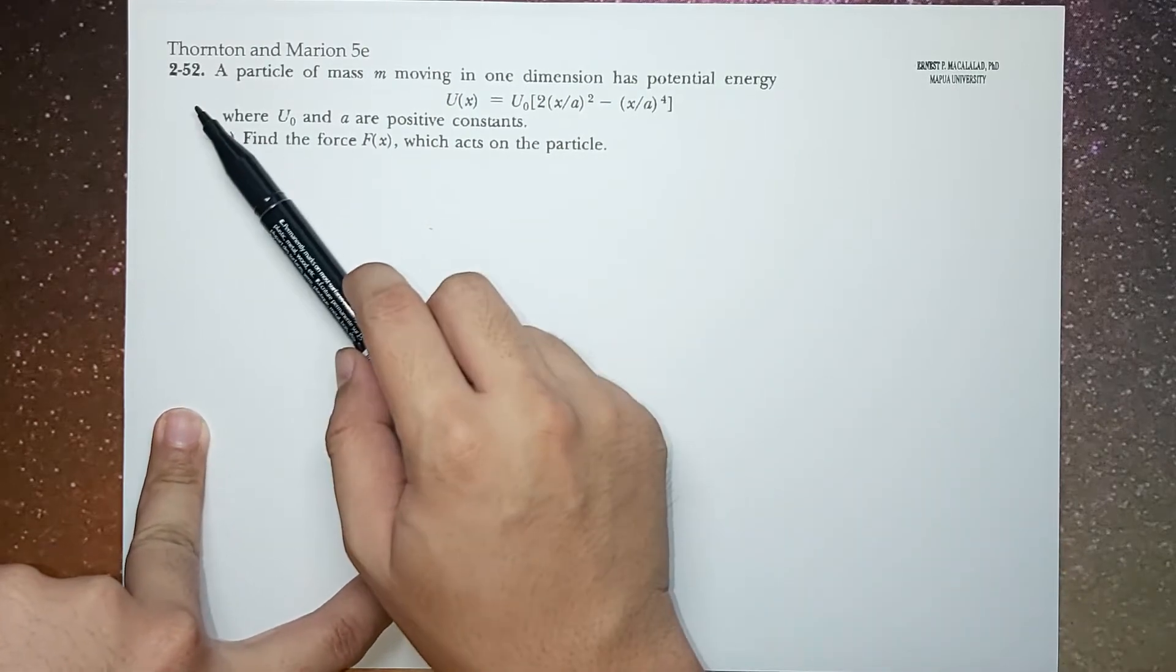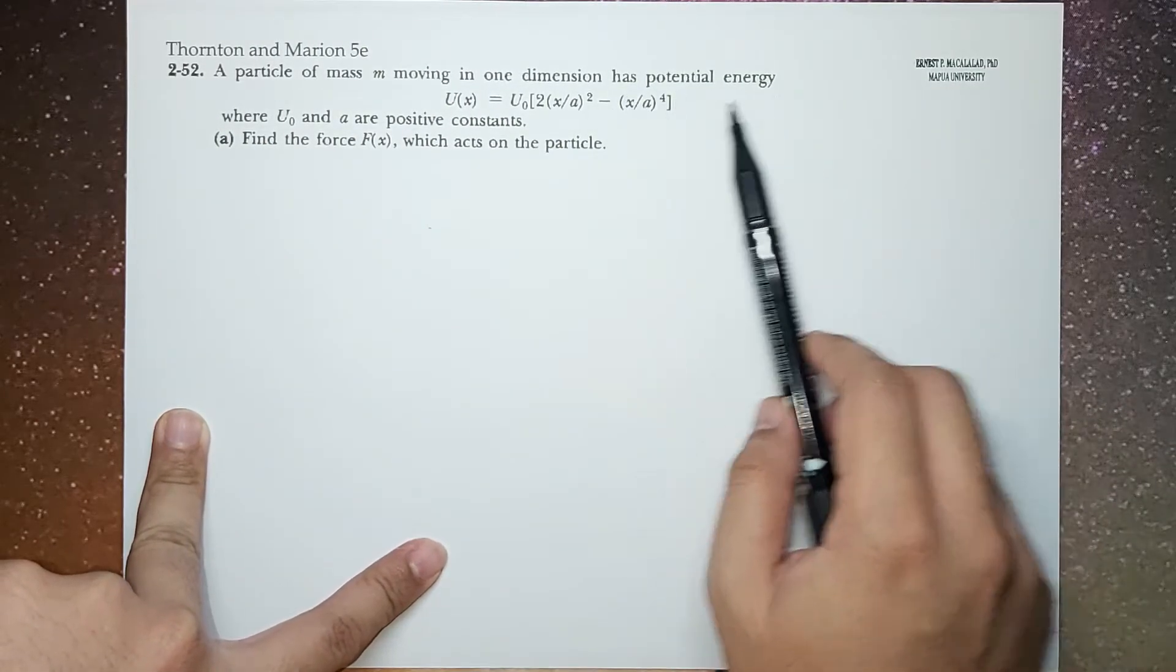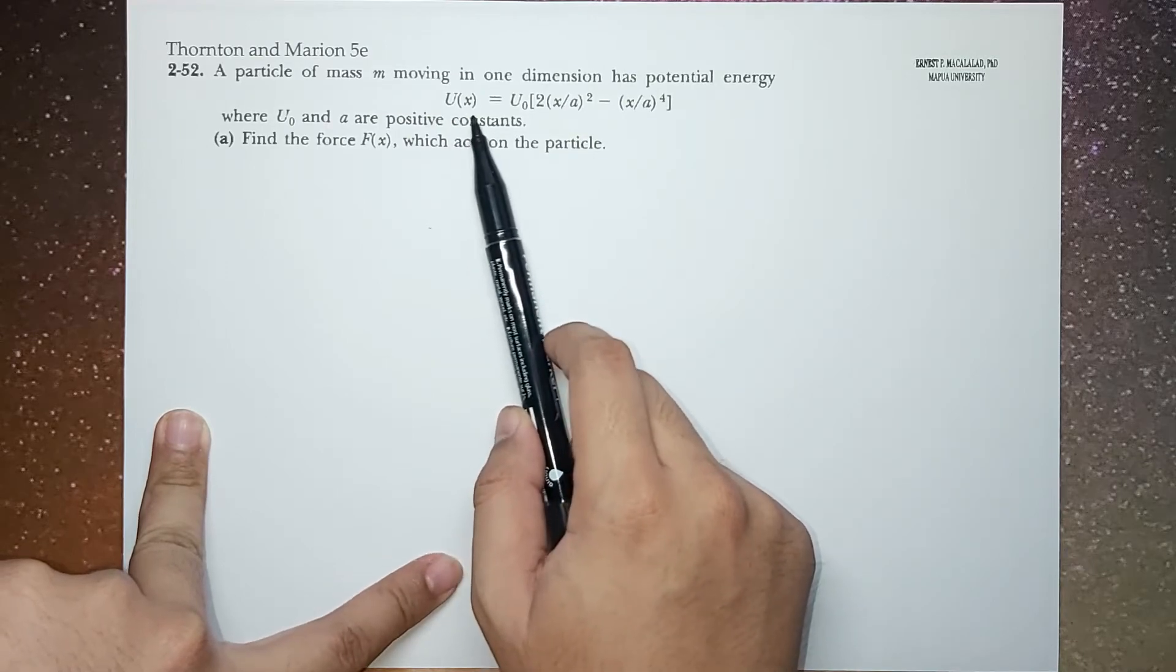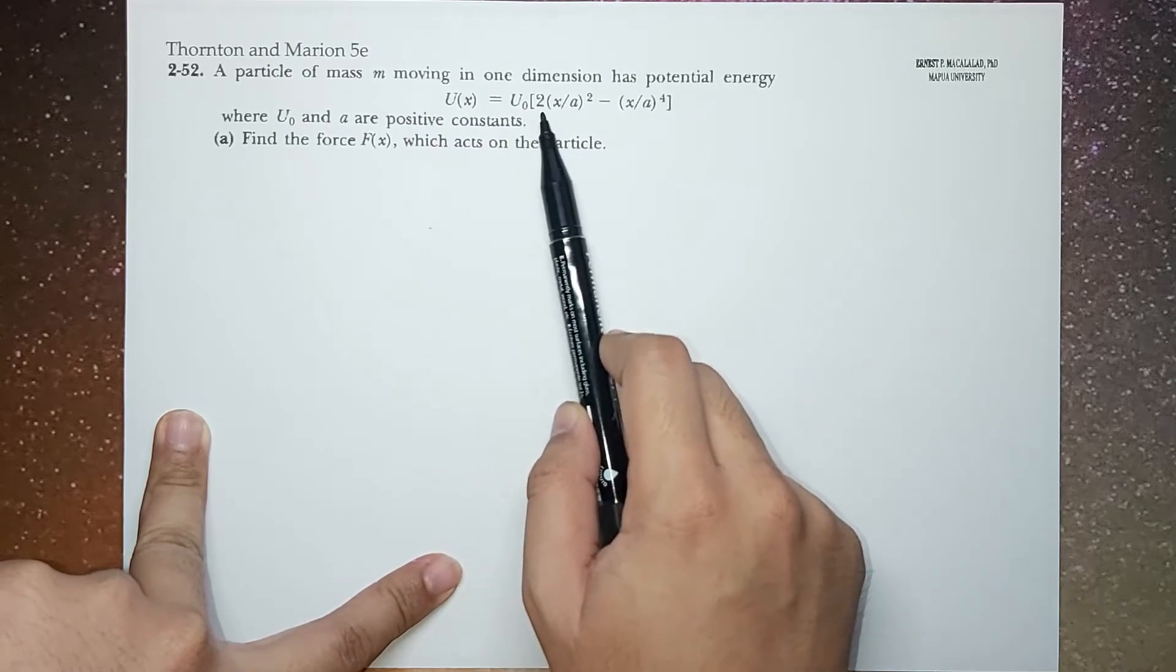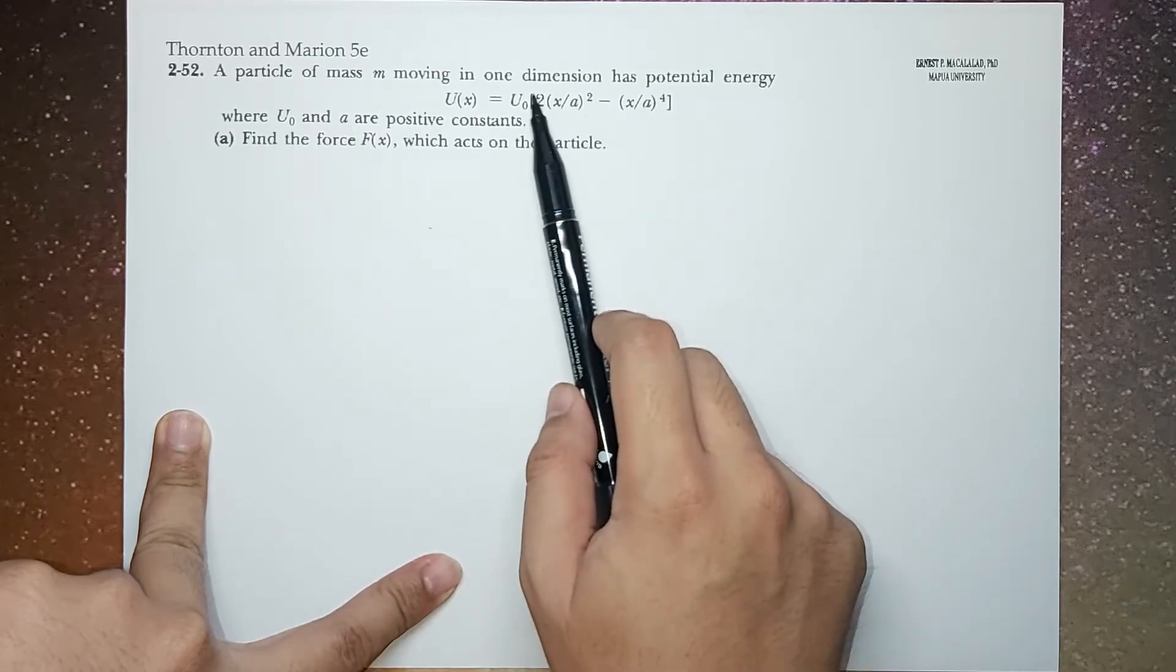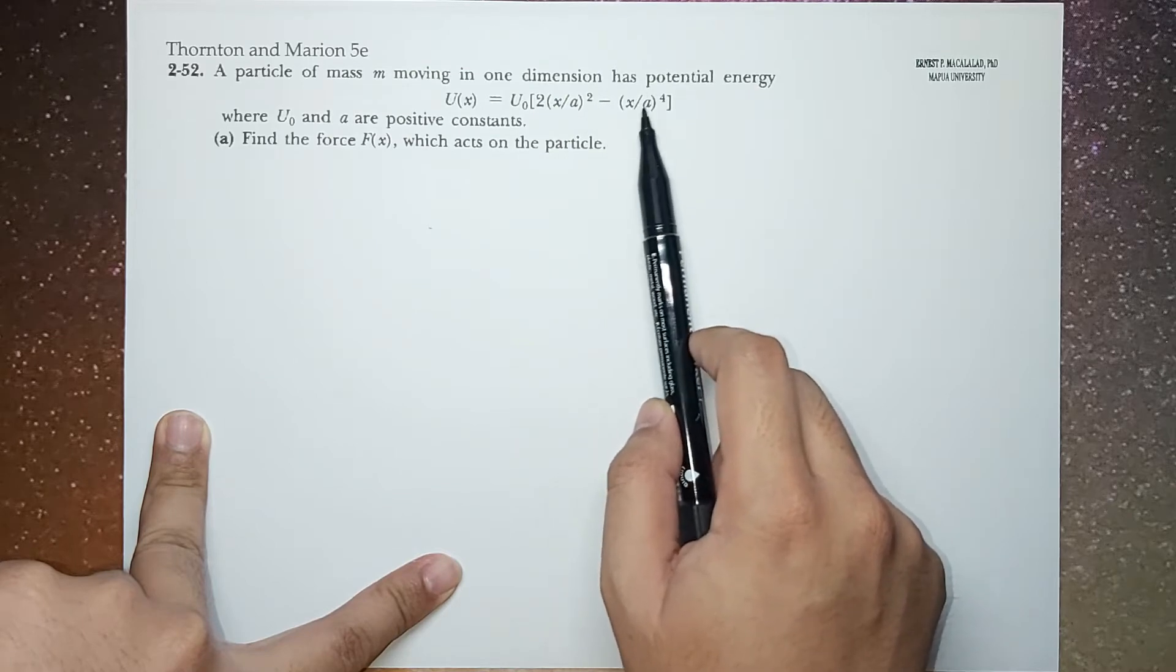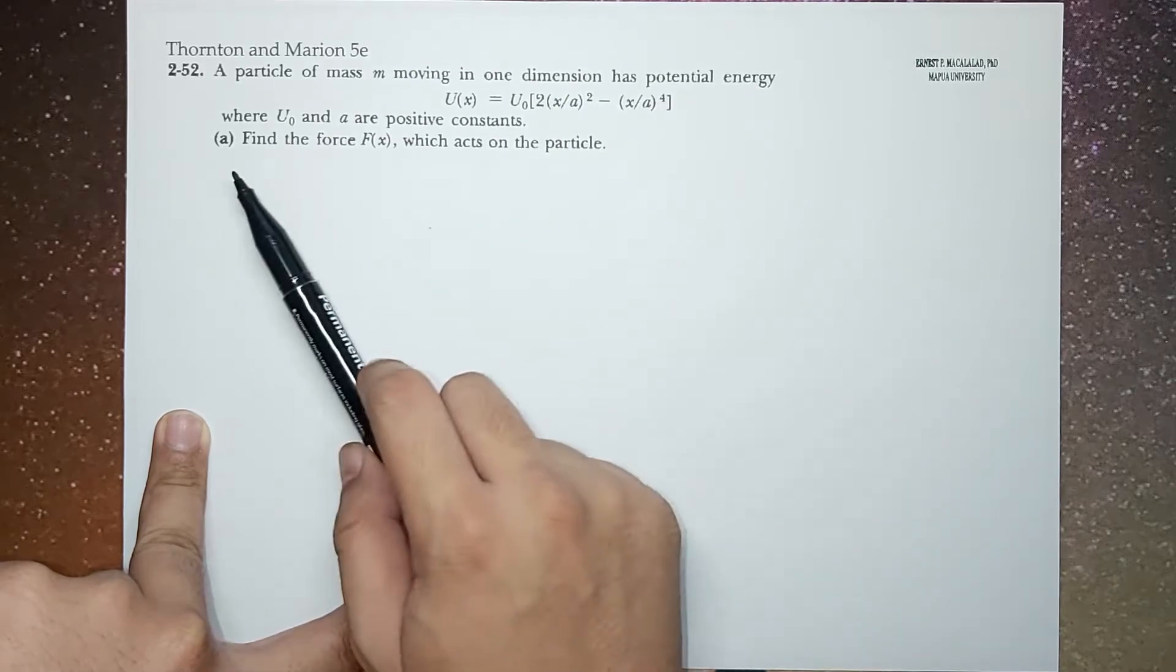The problem reads, particle of mass M is moving in one dimension and has potential energy U, which is the function of X, equals U0 times (2*(X/A)^2 - (X/A)^4). So U0 and A are positive constants.